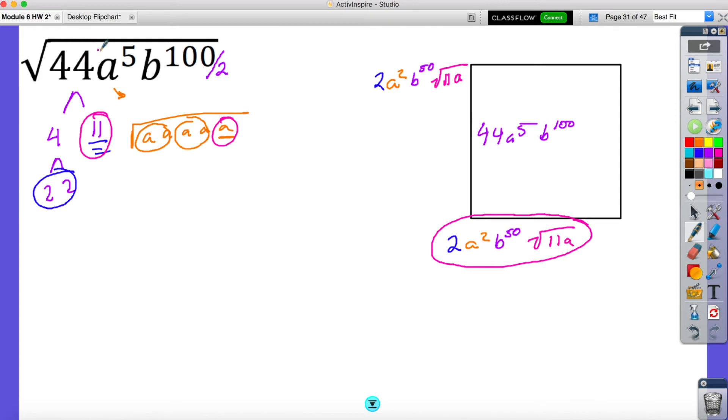So if I ask you to find the square root, just one of the side lengths is your answer. So 2a squared b to the 50th, radical 11a.